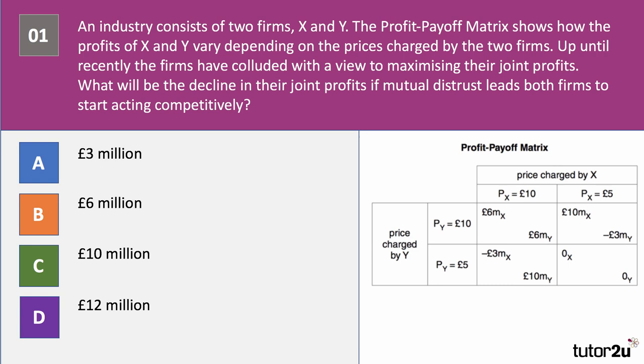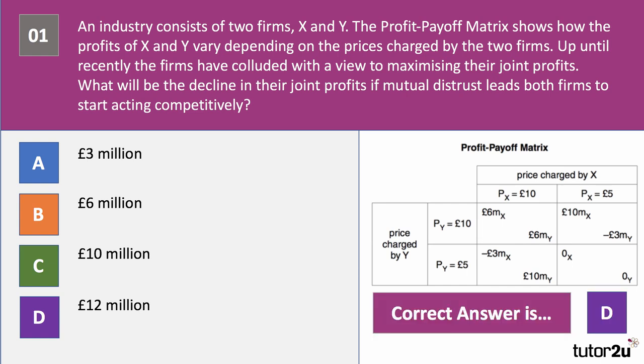Exam question one: an industry consists of two firms X and Y, with a profit payoff matrix shown. Until recently, firms colluded to maximise joint profits. What will be the decline in joint profits if mutual distrust leads both firms to act competitively? The answer is D — £12 million. Firms were colluding at a high price of £10 each, making £12 million profit. If mutual distrust causes competitive behaviour, they both set a low price of £5 and make no profit, so the loss is £12 million.